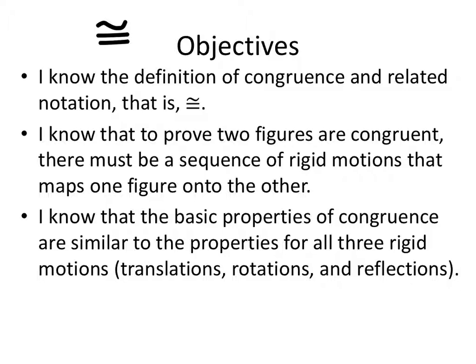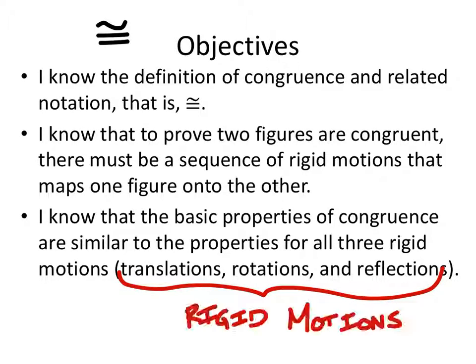I know that to prove two figures are congruent, there must be a sequence of rigid motions that maps one figure onto the other. I know that the basic properties of congruence are similar to the properties for all three rigid motions: translations, rotations, and reflections. These three at the bottom are all three rigid motions, which means that these will always be and always give us congruent shapes.